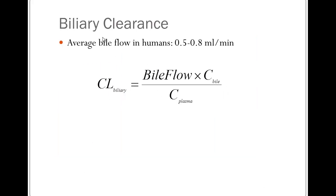We can calculate biliary clearance if we know the bile-to-plasma concentration ratio and the bile flow, which is normally about 0.5 to 0.8 mL per minute. Compare that to liver blood flow, which is much higher — about 1.5 liters per minute — so bile flow is much lower than liver blood flow.